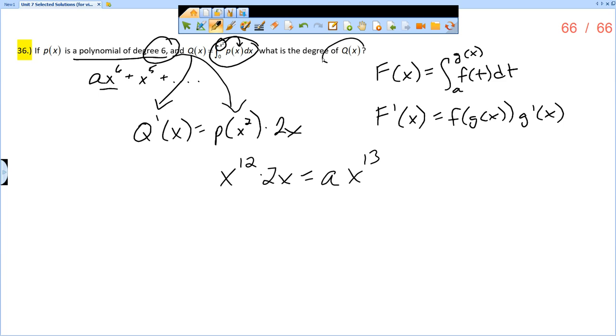So now, the question asks what is the degree of Q(x)? If I go backwards, if this is Q'(x), then that means Q(x) must have been something x¹⁴. And so the degree of Q(x) must be 14.